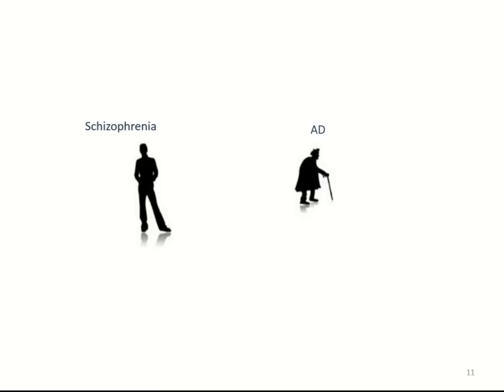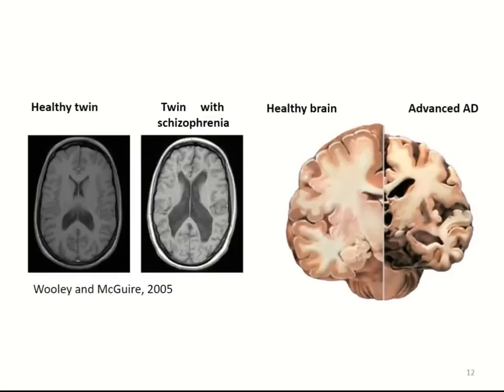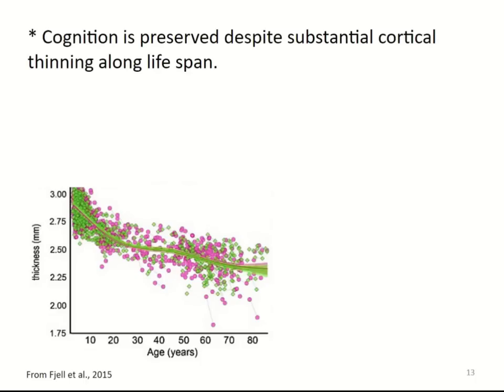I'll now use two examples to explain our strategy: schizophrenia and Alzheimer's disease. On the left, you have an MRI of a healthy identical twin and on the right, the twin with schizophrenia. You can see that genetics is not 100% — environmental and epigenetic changes also affect the cortex, enlarging the ventricles in some people with schizophrenia. On the right side, a healthy brain versus an advanced stage of Alzheimer's disease shows enlargement of ventricles and reduction of cortical gray matter. The symptoms are completely different in both cases, so understanding functional activity is very important.